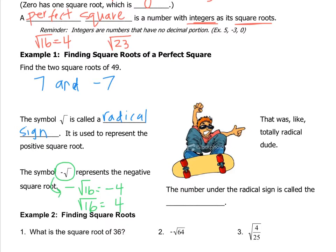Up in example 1, it didn't give us the symbol — it just said find the two square roots. So that means they wanted both numbers. Just for some nice terminology, the number under the radical sign is called the radicand.